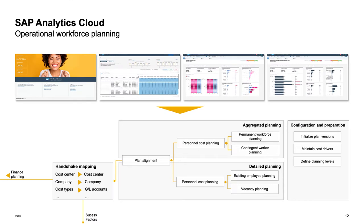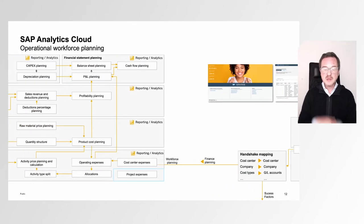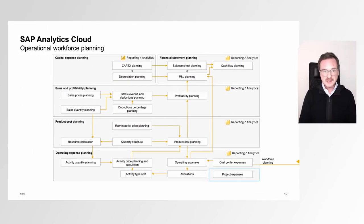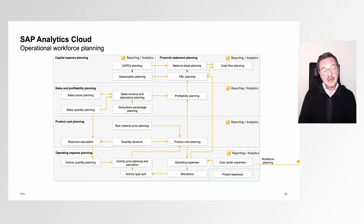With our open export API shipped in Q2 2022, we can write back new plan positions directly into SuccessFactors Employee Central. We can also move the personnel expenses into the next content package, which is our financial plan. Personal expenses will arrive in the cost center plan, and from the cost center plan they will move into the profit and loss statement.